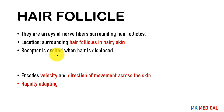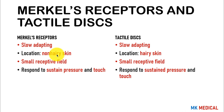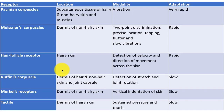Ruffini corpuscles are found in the dermis of both hairy and non-hairy skin, as well as joint capsules. They have a large receptive field and encode stretch and joint rotation; they are slowly adapting. Merkel's receptors are found in non-hairy skin and tactile discs are found in hairy skin — both are slowly adapting with a small receptive field and encode sustained pressure and touch. A high-yield summary table covers all receptor types, their locations, adaptation rates, and encoding properties — take time to memorize it for exams.